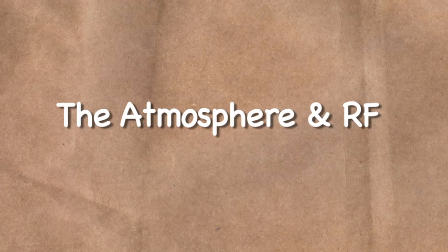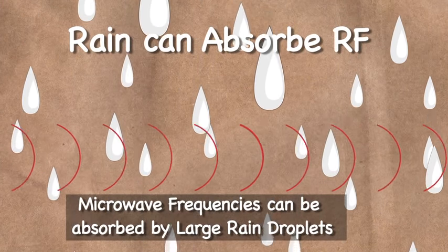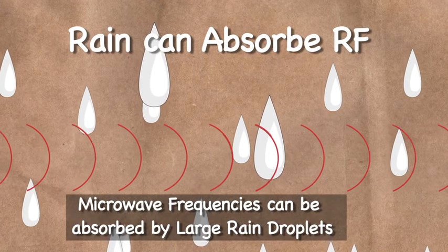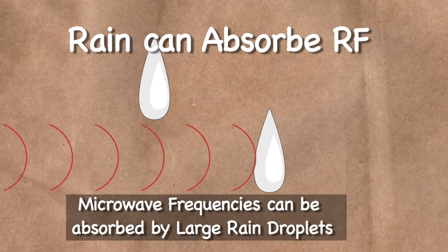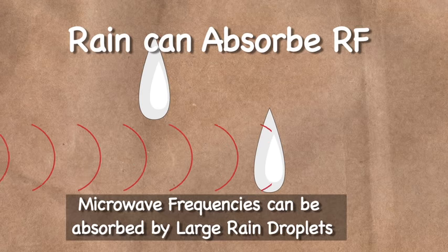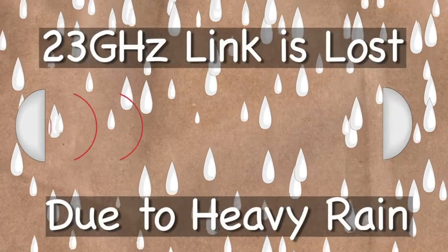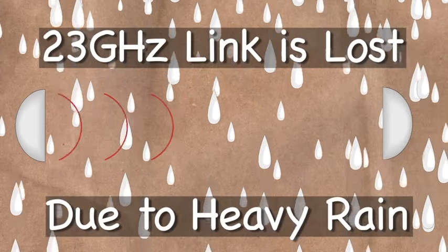Atmospheric conditions affect the way in which radio waves propagate through the air. Heavy rain can absorb certain high-frequency radio waves because their short wavelengths allow them to be absorbed by large rain droplets. Microwave links in the 23 GHz band can fade out totally during times of heavy rain, for example.